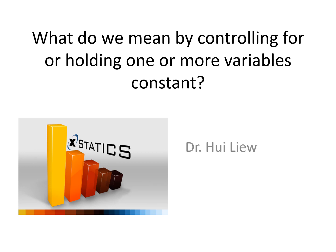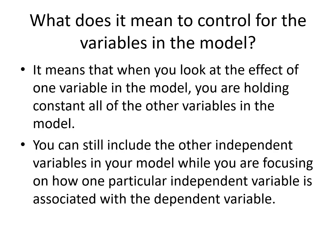In this lecture, we will talk about what we mean by statistical control and holding the effects of other variables constant in our model. Statistical control allows us to look at the effects of one particular independent variable on the dependent variable in our model, while holding constant the effects of all other independent variables. Mathematically, it allows us to include the effects of other independent variables while we are focusing on how one particular independent variable is associated with the dependent variable.